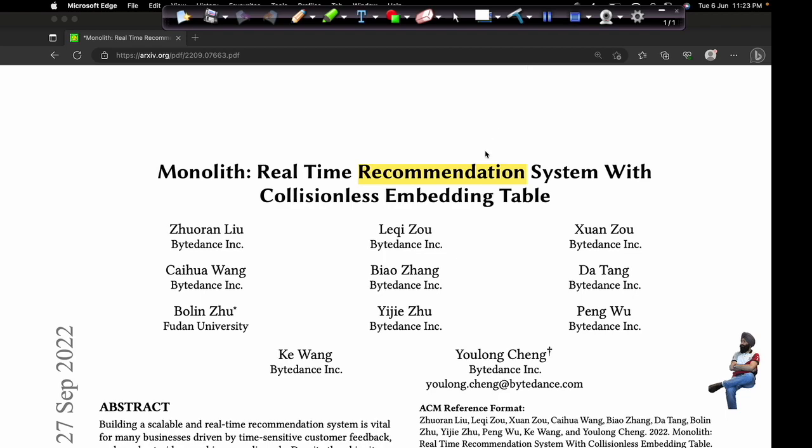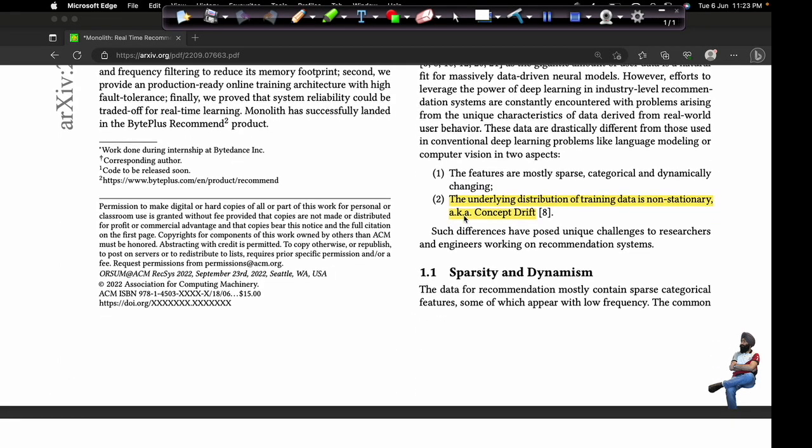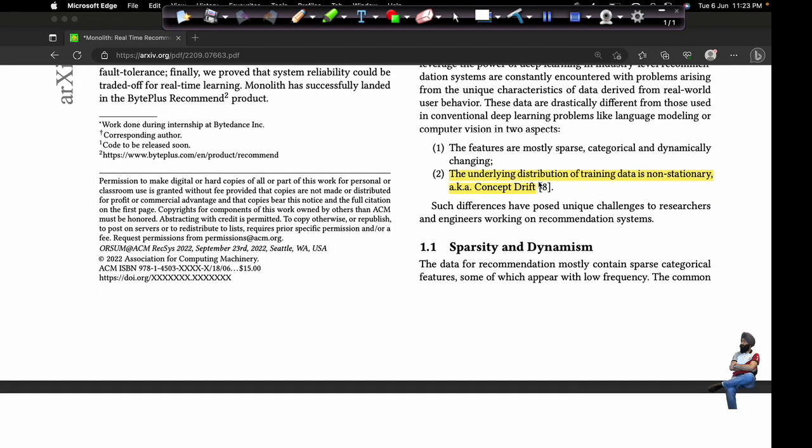This is a paper by TikTok which explains the system design of real-time recommendation and the optimizations they did to improve recommendations. The first observation was that the distribution of data is non-stationary and there is a conceptual drift. The user taste and user interest are changing in a matter of seconds and minutes.